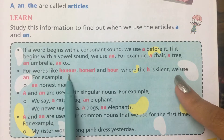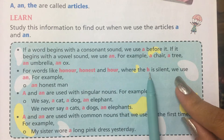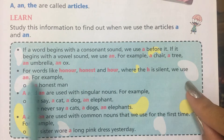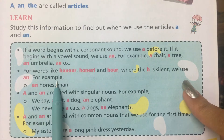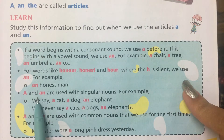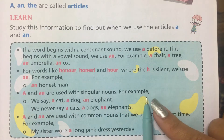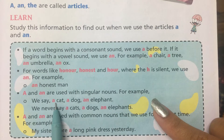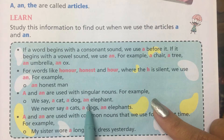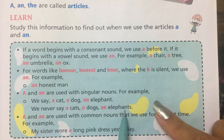For words like honor, honest, and hour, where the H is silent, we use An. For example: an honest man. A and An are used with singular nouns. For example, we say a cat, a dog, an elephant. We never say a cats, a dogs, an elephants.